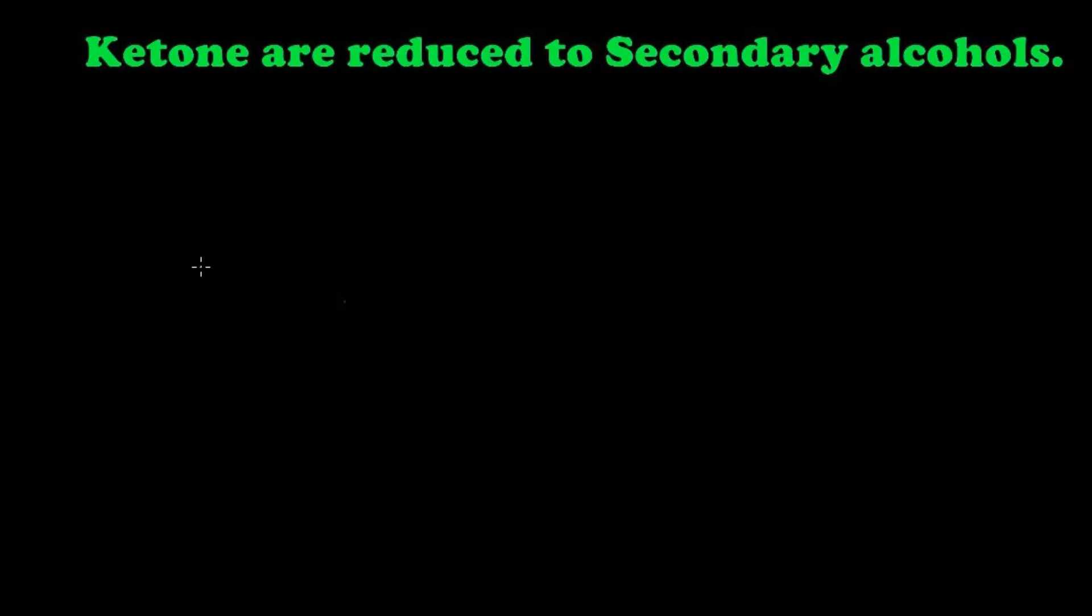Hi, in this video we are going to learn the reduction reaction of ketone. That is, we are going to reduce ketone to secondary alcohol. Let's take acetone: CH3-C=O-CH3. This is acetone we are going to reduce.